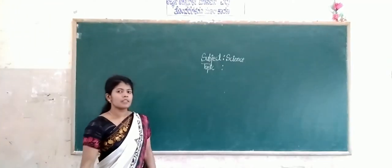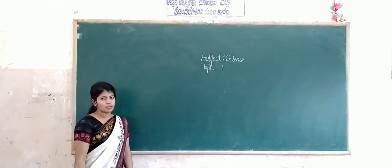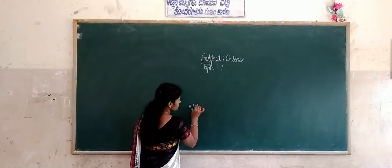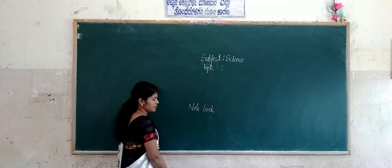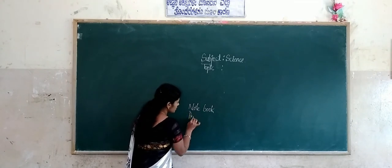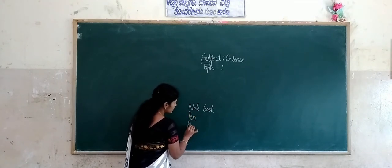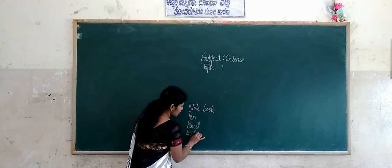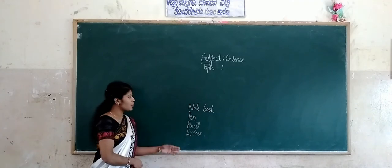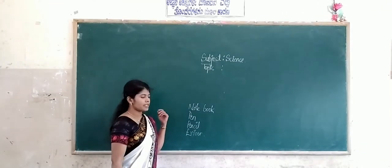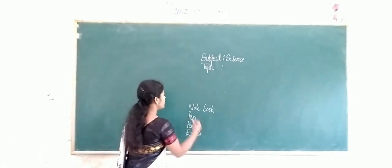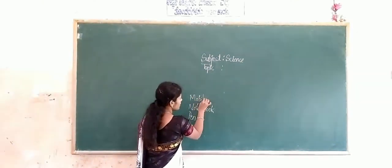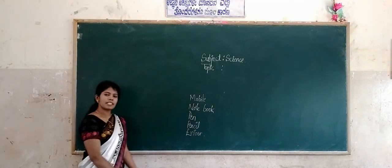Yes, students — which are the things you have now? Notebook, pen, pencil, eraser. Now you have notebook, pen, pencil, eraser, and mainly mobile. Is it correct? Can you start the class?